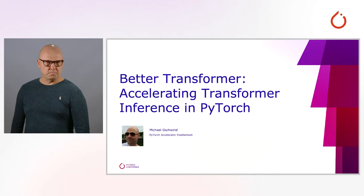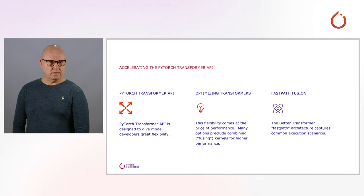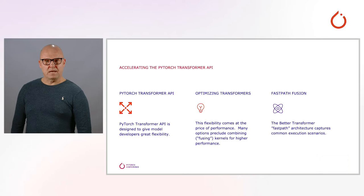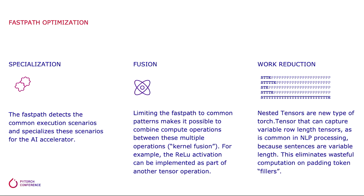This limits the optimizations that may be performed, and in particular, the opportunity to fuse computation kernels and have a single kernel perform several steps of the Transformer functionality at the same time. We solve this tension between flexibility for model developers for research and development and performance for model deployment with the Better Transformer Fast Path architecture, which captures the most common execution sequences and provides highly optimized implementations that take advantage of state-of-the-art software techniques and AI accelerators such as GPUs.